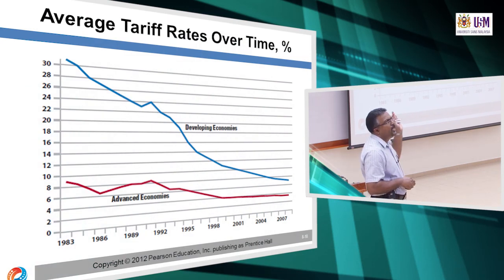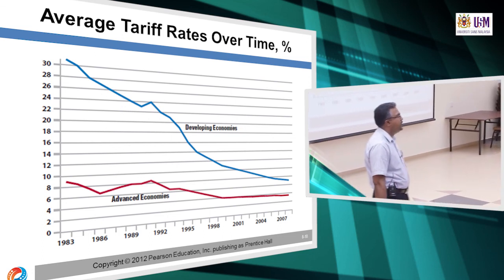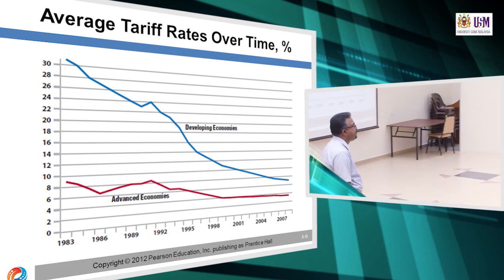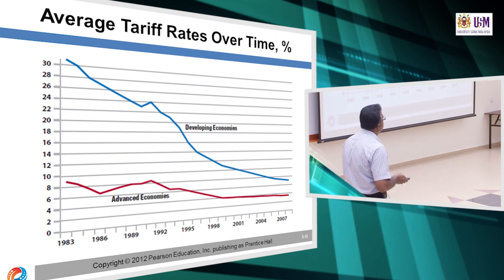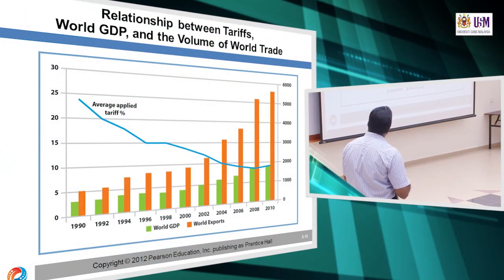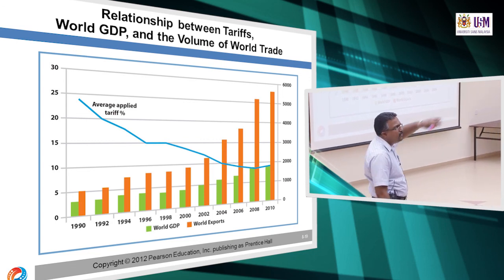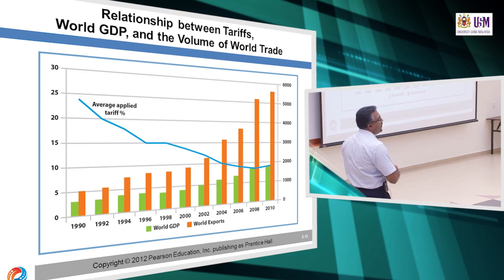You can see that average tariff over time has really reduced in both advanced economies and developing economies because we want to advocate free trade — that's why you can now buy Honda or Volkswagen after you graduate. The relationship between tariff, world GDP and the volume of world trade: when average tariff drops, world GDP goes up, and world exports also go up. When world exports go up, world GDP rises as a result of the drop in tariff.